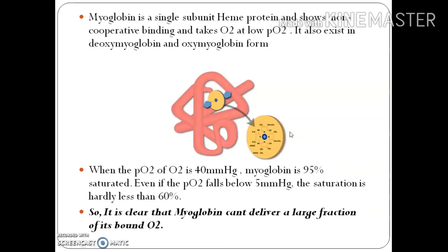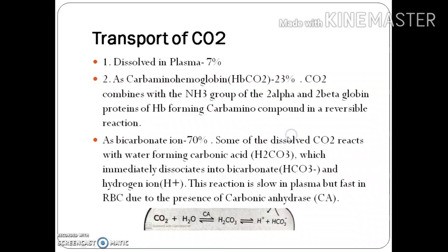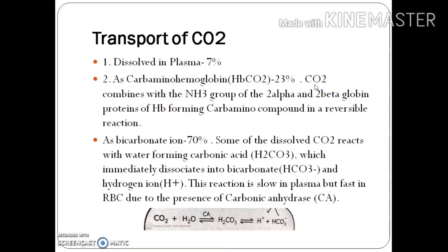After this brief comparison, let's move to the transport of carbon dioxide. First, 7% of CO2 is dissolved in plasma — carbon dioxide is more soluble in plasma than oxygen. Second, 23% of CO2 is carried as carbaminohemoglobin (HbCO2). Carbon dioxide combines with the amine groups of the alpha and beta chains of hemoglobin, forming a carbamino compound in a reversible reaction.